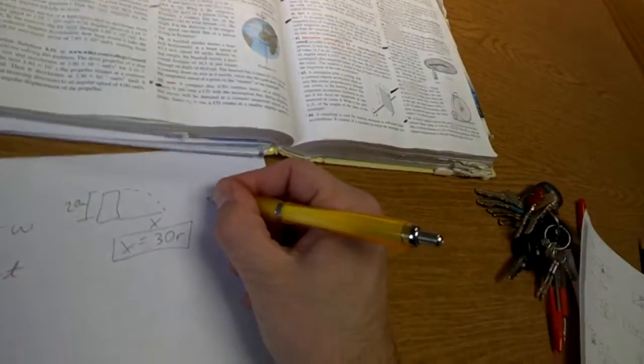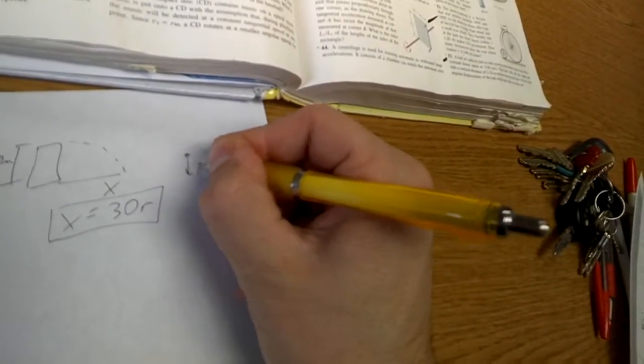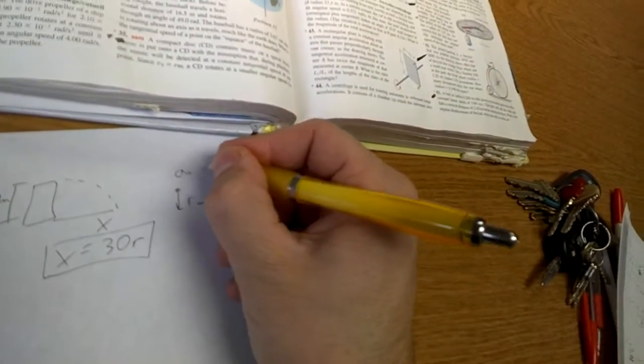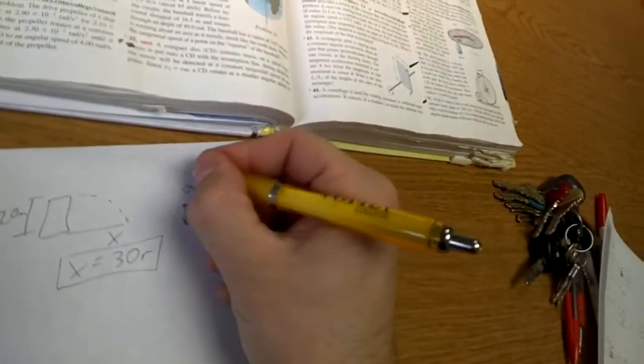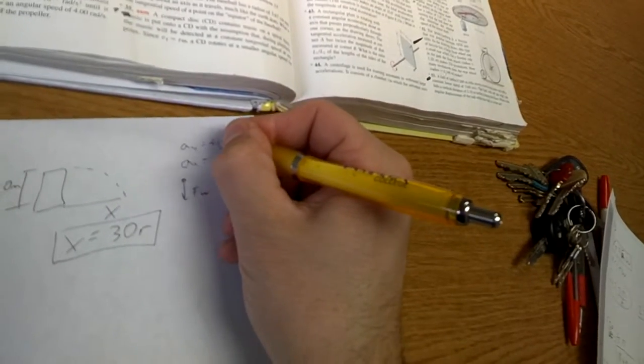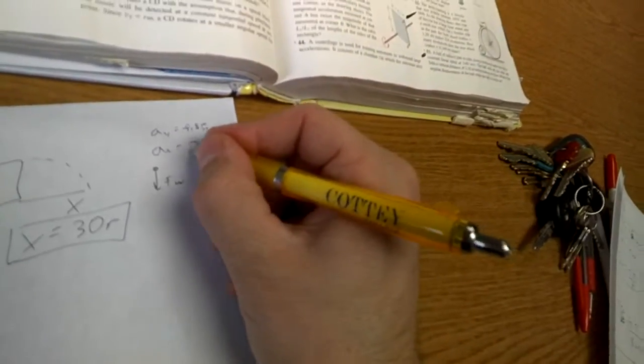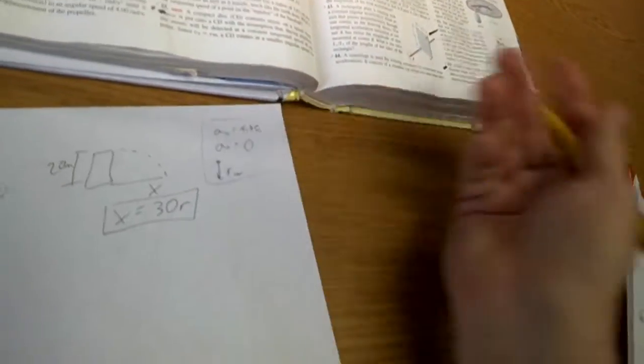First of all, we're in free fall, so our free body diagram should just be a force of weight going down, which tells me, not angular stuff, just linear stuff. Acceleration in the y is negative 9.8, and acceleration in the x is zero because we're in free fall.